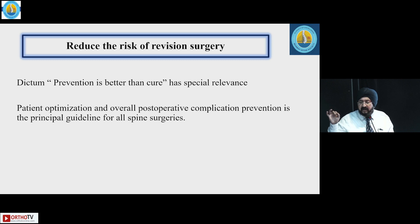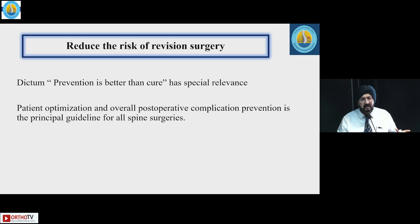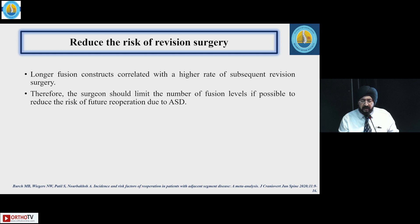The dictum that prevention is better than cure has special relevance here. Patient optimization and overall post-operative complication prevention is the principal guideline for all spine surgeries. If surgeries are planned well, some revision surgeries can be prevented. While zero errors are not possible, taking complexity into consideration and planning well can reduce the incidence. Studies show that limiting the number of fusion levels can also reduce the risk of future re-operation.